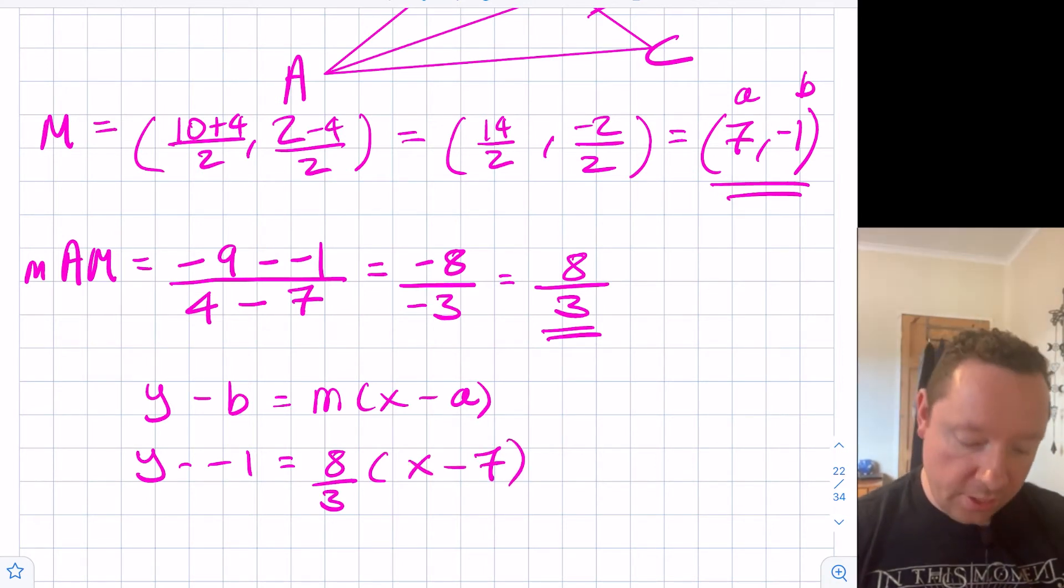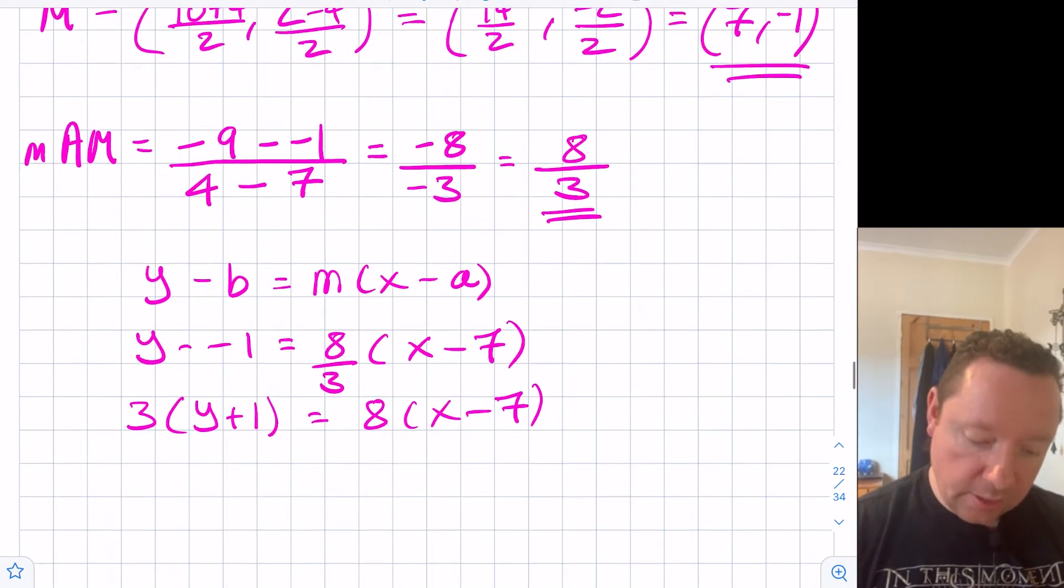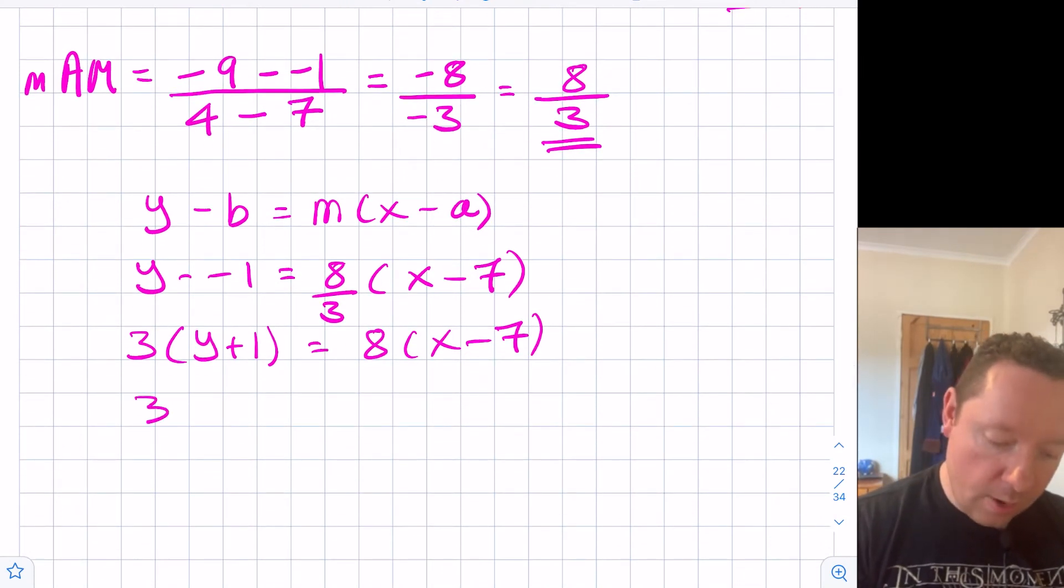Multiplying through by 3 we get 3(y plus 1) because of the minus minus equals 8(x minus 7). And then just tidying that up, 3y plus 3 equals 8x minus 56.